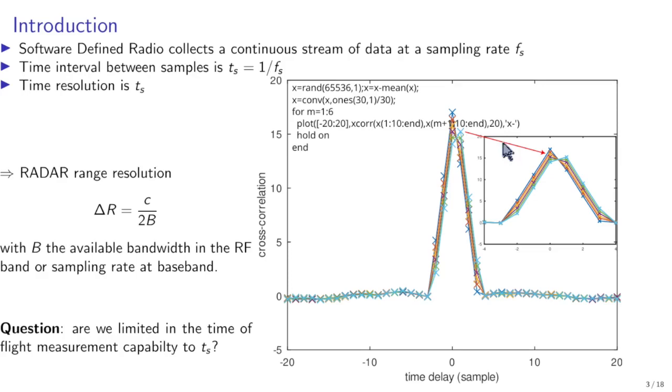Now your cross correlation peak will always be at 0 because the autocorrelation of a random signal is always 0. But if you look at the shape of the cross correlation, you see that we already have the insight that we're going to see something below the sampling period because the shape of a correlation peak will give us some sort of information on a sub period resolution.